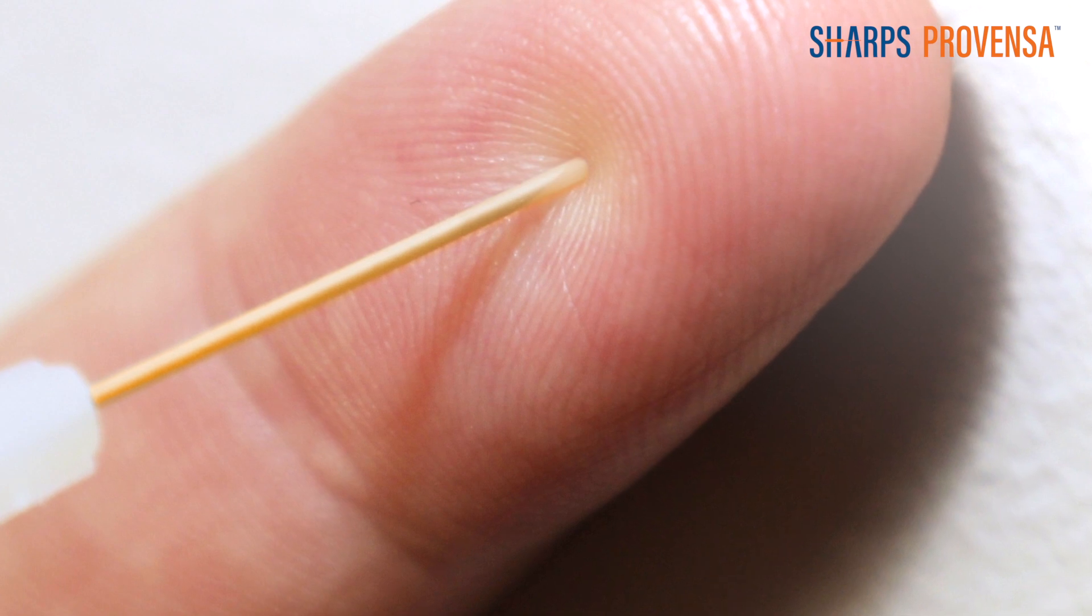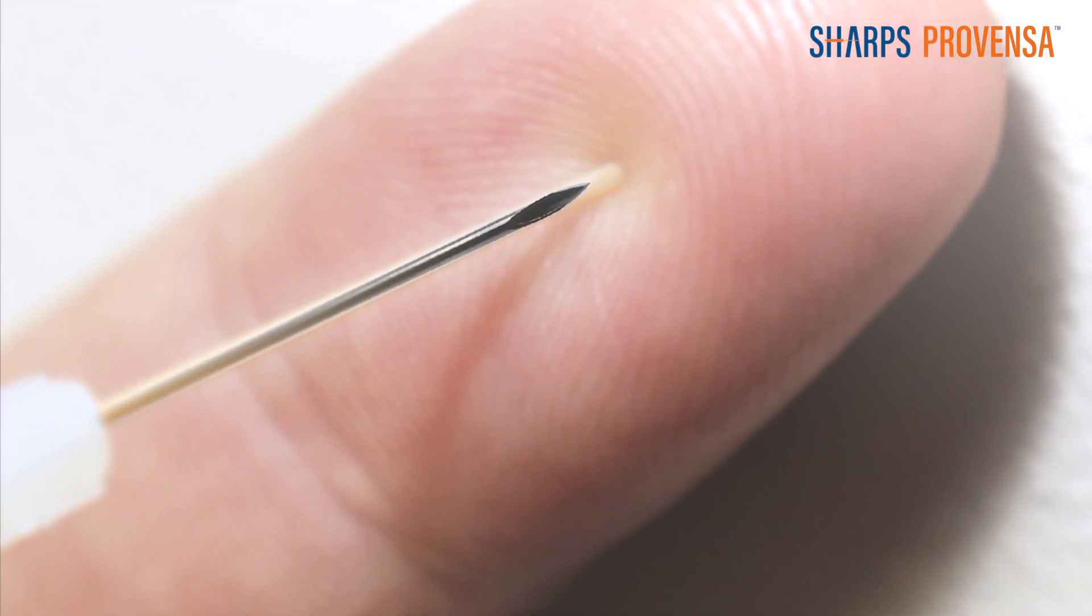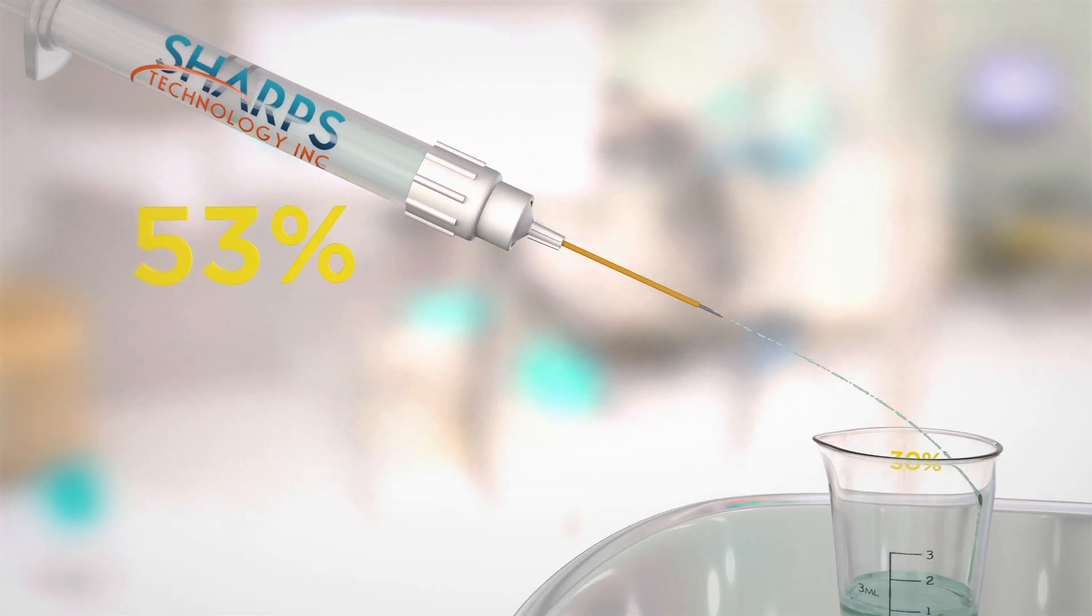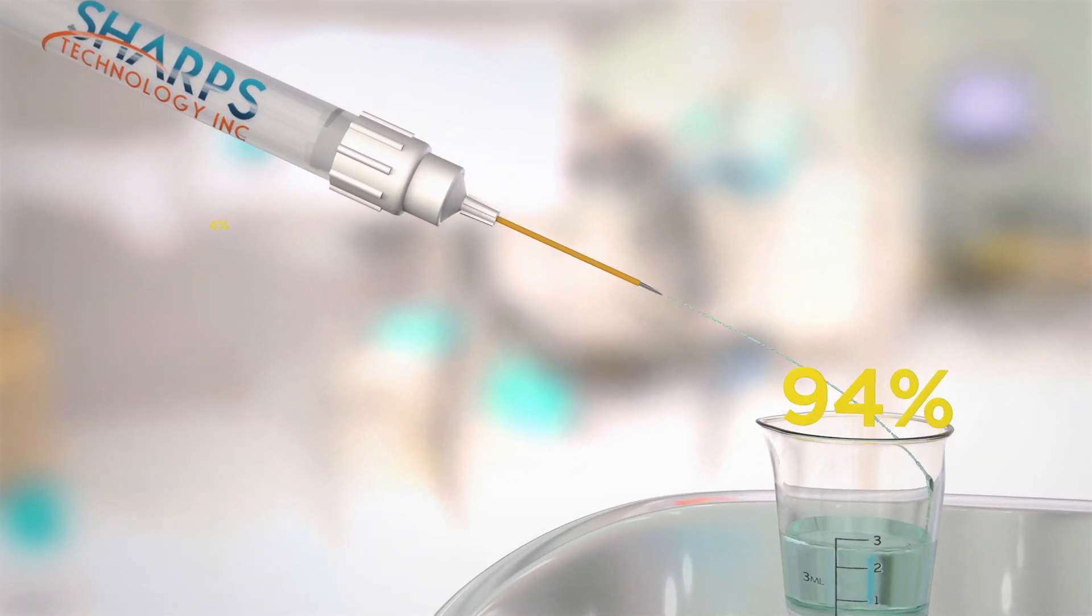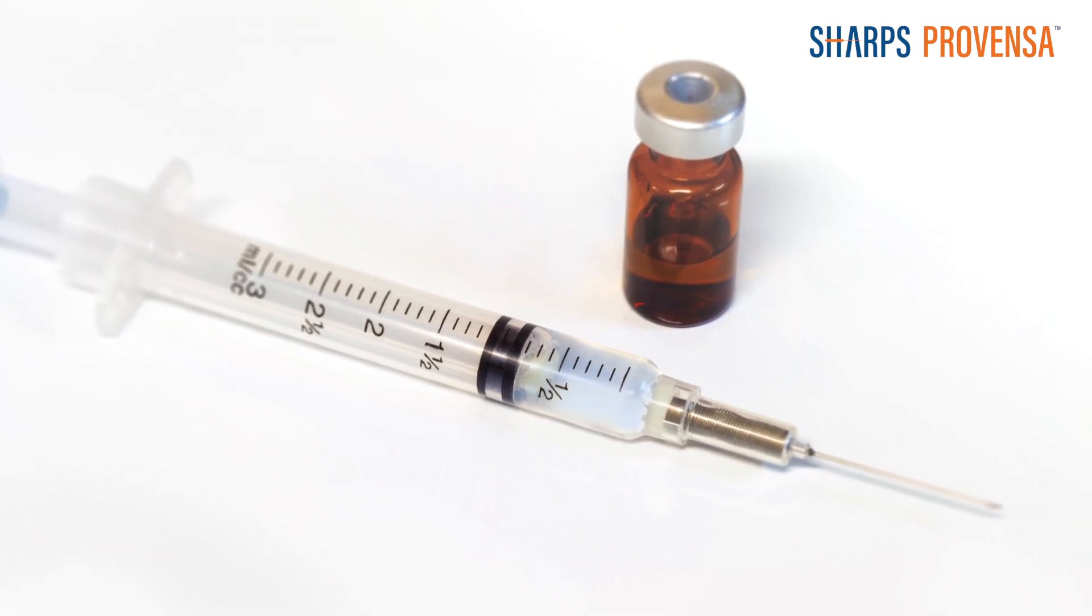There is never a need to recap, and post-use needle stick injuries are well and truly dealt with. Sharps Provenza creates a new industry standard with its ultra-low waste design, which practically eliminates waste space in the syringe where unused medicine collects and is thrown away.